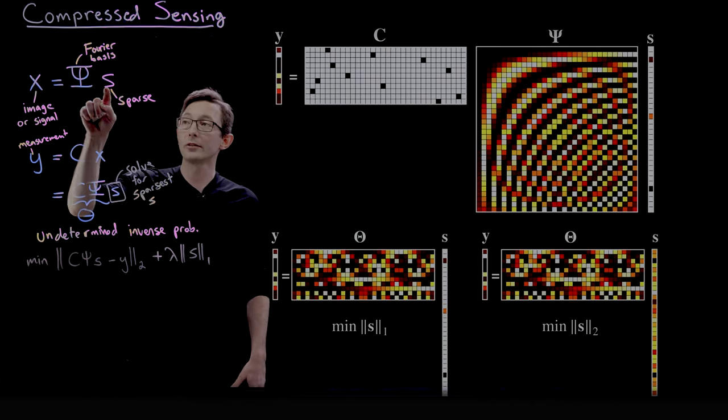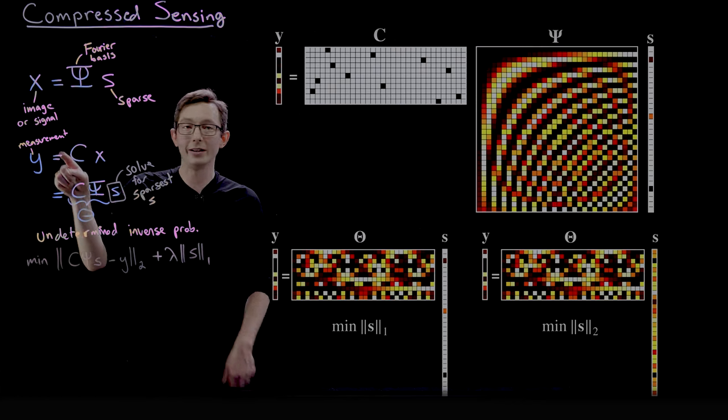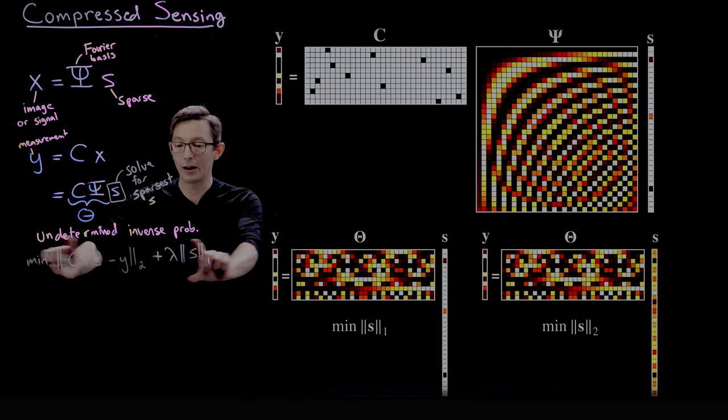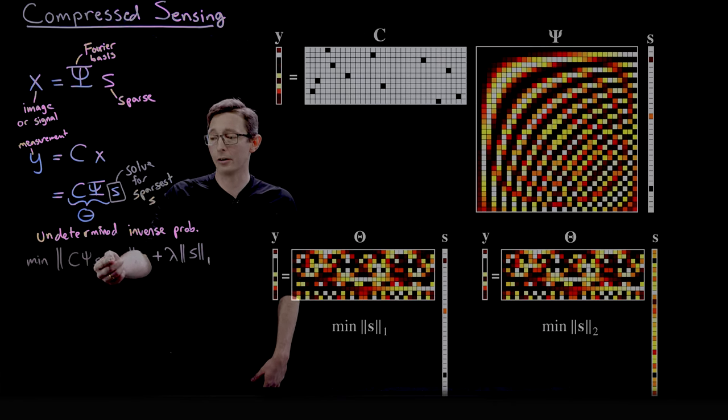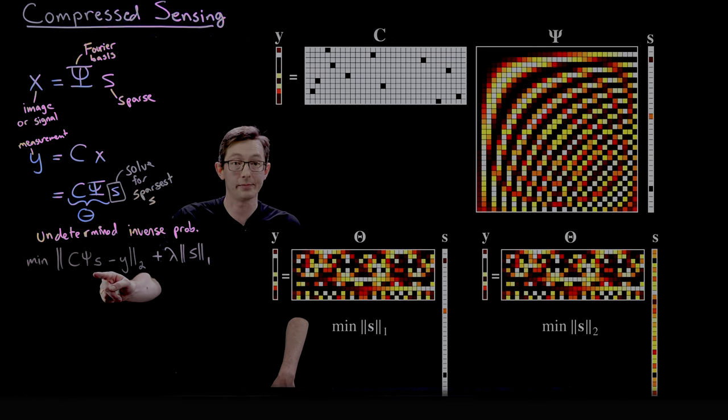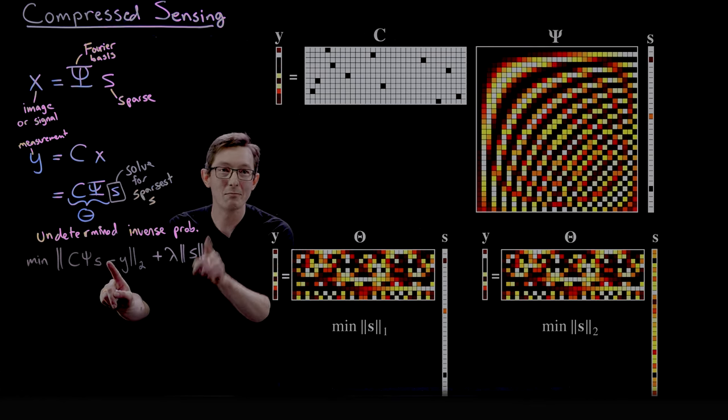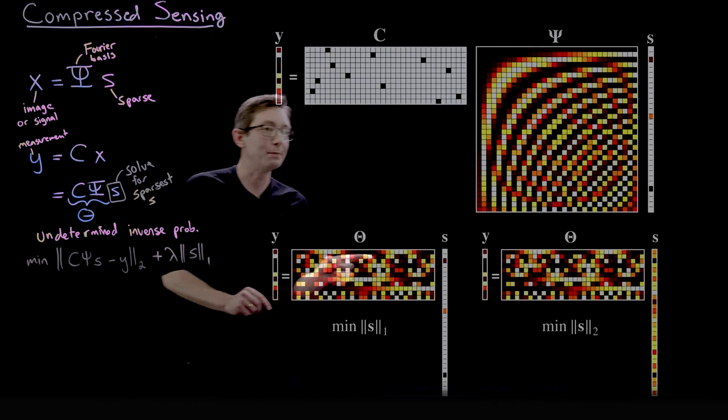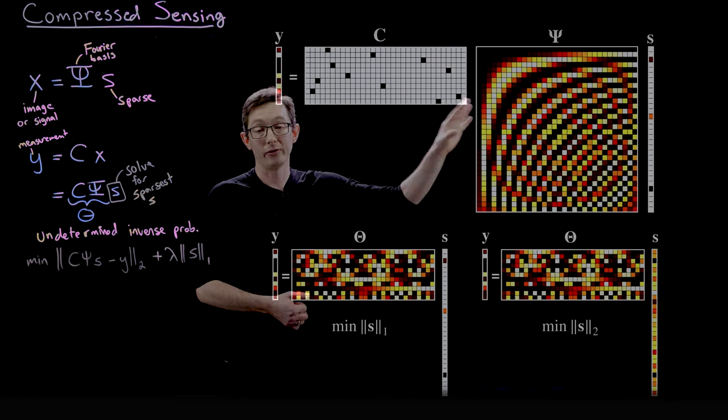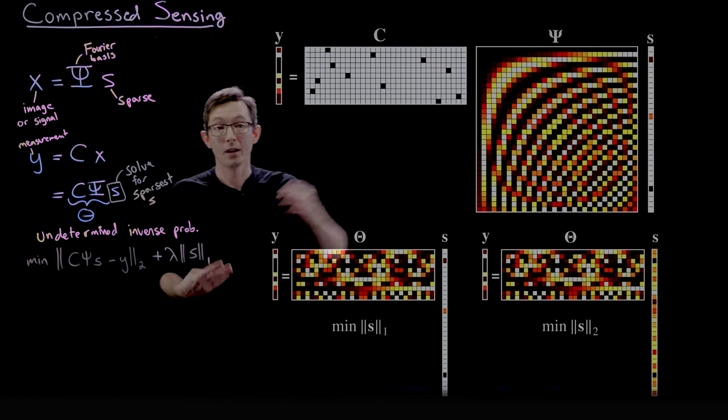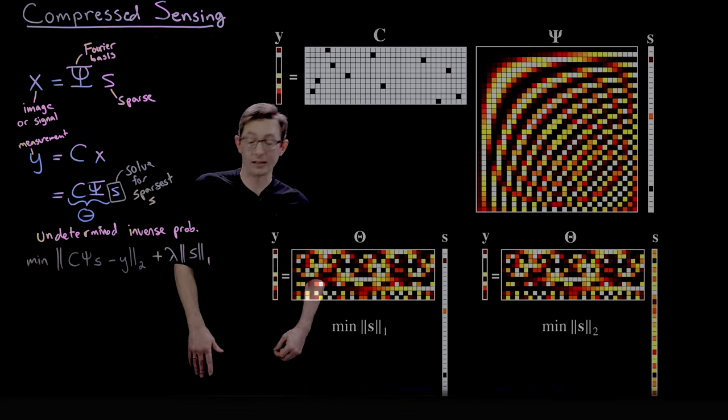So if you're looking for solutions s to this system of equations that are as sparse as possible, this is the kind of optimization that you want to be solving. You want to minimize the error in the fit, we know C, we know psi, we know y, we're solving for s, such that s has the minimum one norm. And that's going to give me the sparsest possible solution, and that's going to allow me to solve this problem in a convex optimization.